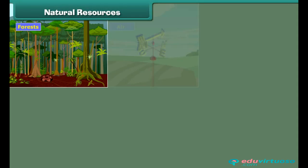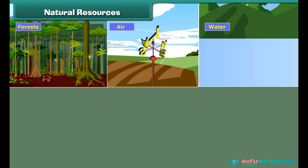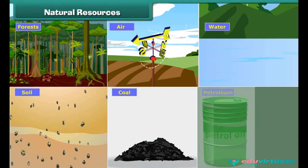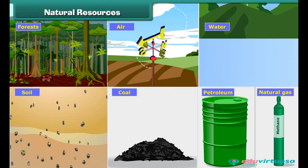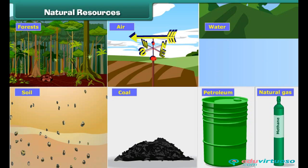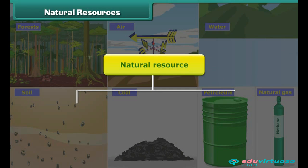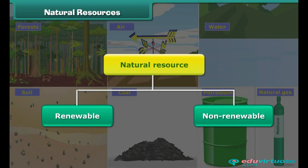A natural resource is a stock of material given to us by nature for use. It is not created by human beings. Natural resources are of two types: renewable and non-renewable.